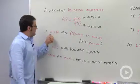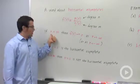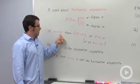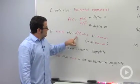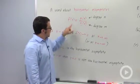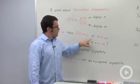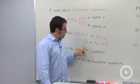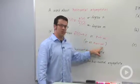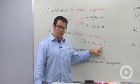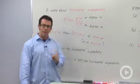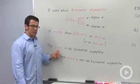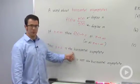Now if the degree of the numerator is less than the degree of the denominator, then f of x goes to 0 as x goes to infinity, and it also goes to 0 as x goes to negative infinity. That means y equals 0 is a horizontal asymptote.